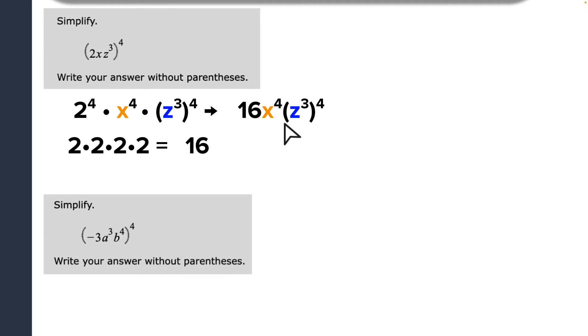The x is already simplified. There's nothing more to do with this. So I'm going to focus on the z, and I'm going to go 3 times 4 to tell me how many z's there are actually being multiplied here. So there's 12. So I have 16 times x to the fourth power, times z to the 12th power.